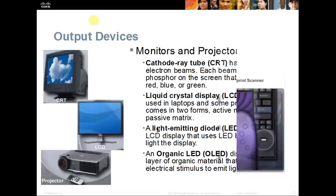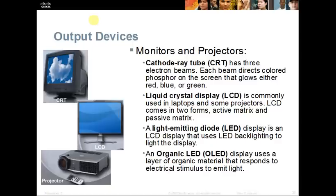For output devices, there are three major types of monitors: a CRT monitor, an LCD monitor, or a projector. CRT stands for cathode ray tube — they are no longer being made. LCD and LEDs are now a lot cheaper and take up less space. LCDs are commonly used with laptops and projectors and usually come in two forms: active matrix and passive matrix.